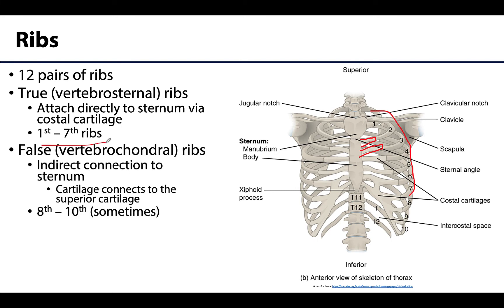The eighth, ninth, and sometimes tenth ribs have an indirect connection to the sternum. The costal cartilage of rib eight, for example, does not go directly to the sternum because it is too superior, so it attaches to the costal cartilage of the seventh rib — and sometimes even the sixth — to indirectly articulate with the sternum. These are referred to as false ribs, though it's a somewhat misleading name; it's all about that indirect connection.